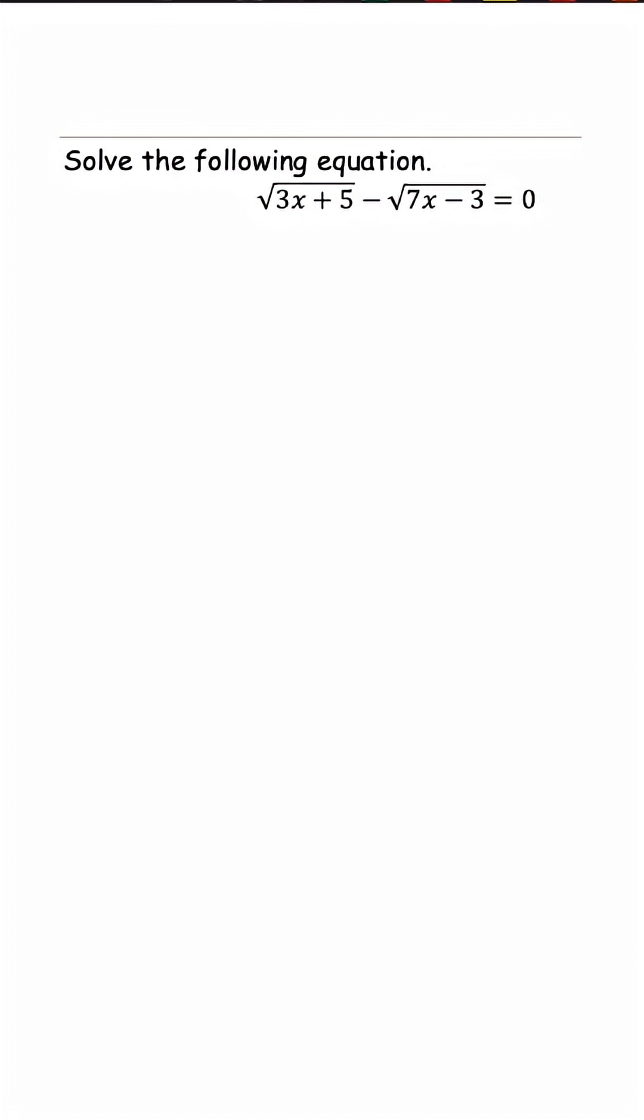We're solving radical equations, and when we have more than one radical, the first thing we want to do is isolate it. So we start off, we're going to have 3x plus 5 is equal to radical 7x minus 3.